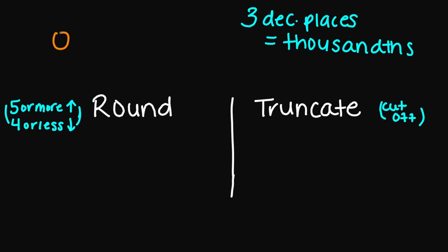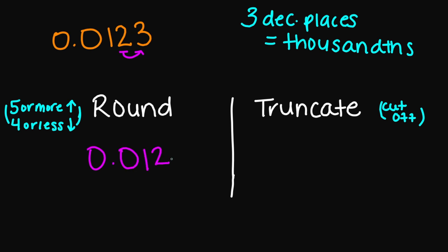Let's try 0.0123. Three decimal places puts me right here at the 2. If I look next door, I have a number less than 5, so I'm rounding down. My rounded answer is 0.012. And if I have to truncate, I cut right between the 2 and the 3, so the truncated answer is also 0.012.